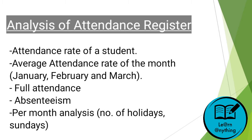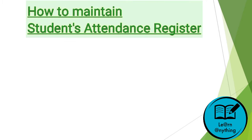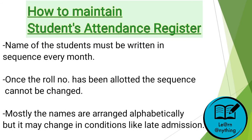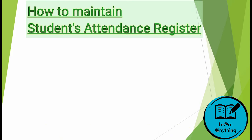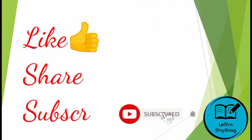I hope you have understood today's session. One thing to note: in many schools, student names are listed alphabetically, while in others they are listed by admission order from the admission register with roll numbers. The names you have written will remain the same every month — do not rearrange them. Consult your school to confirm whether students are listed alphabetically or by admission order. I will share the attendance register analysis in the next session. If this was helpful, please like, share, and subscribe. Thank you.